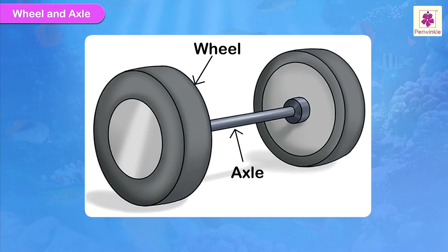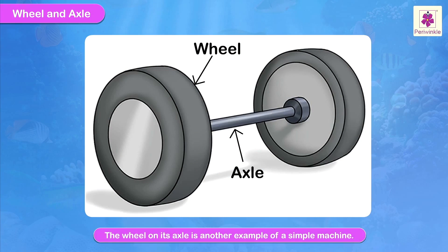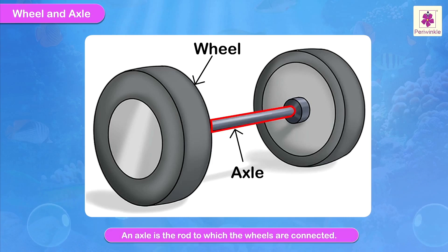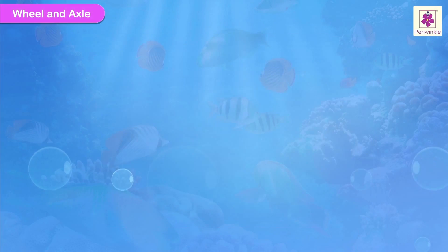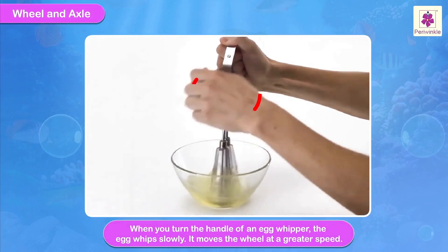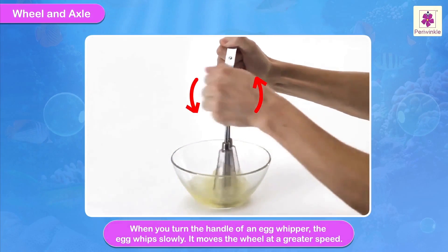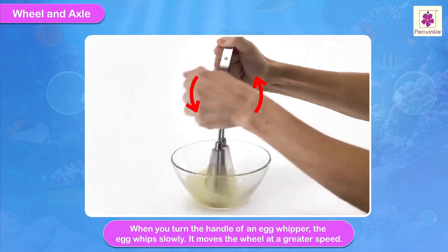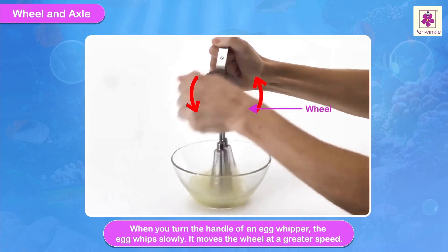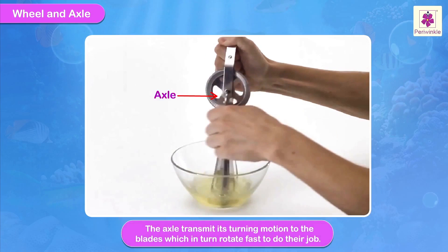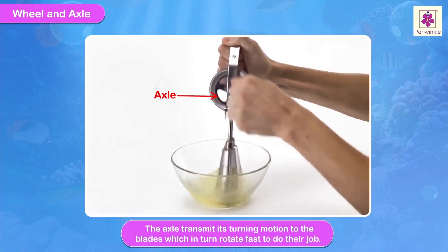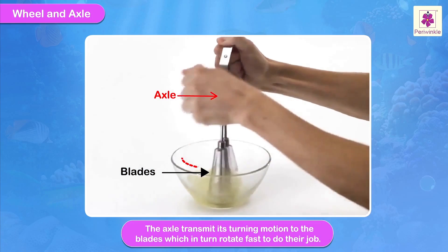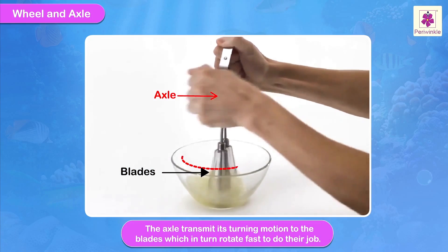Wheel and axle. The wheel on its axle is another example of a simple machine. An axle is the rod to which the wheels are connected. When you turn the handle of an egg whipper, it moves the wheel at a greater speed. The axle transmits this turning motion to the blades, which in turn rotate fast to do their job.